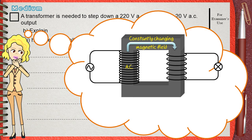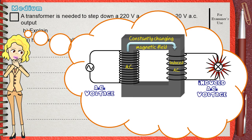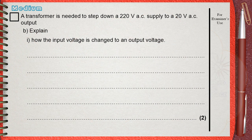The induced voltage is also AC, and it is related to the number of turns on the secondary coil. The ratio between the number of turns on the primary coil and the number of turns on the secondary coil is the same ratio as the voltage on the primary coil to the voltage on the secondary coil. This is how the transformer works — AC voltage on the primary changes to induced AC voltage on the secondary.